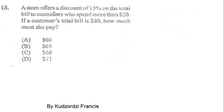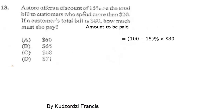A store offers a discount of 15% on the total bill to customers who spend more than $20. If a customer's total bill is $80, how much must she pay? The amount to be paid is equal to 100% minus the discount rate of 15%, times 80.